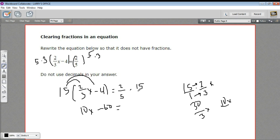And here, 2 fifths times 15 over 1. Well, 2 times 15 is 30, and 5 times 1 is 5. 30 divided by 5 is 6. So we end up with 10x minus 60 equals 6.